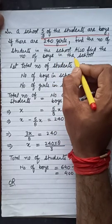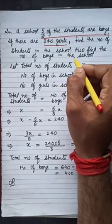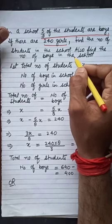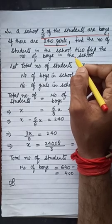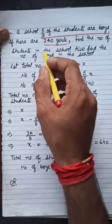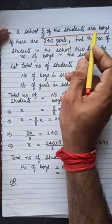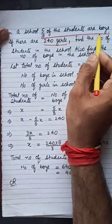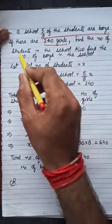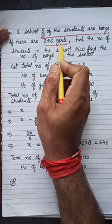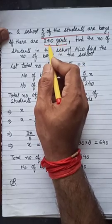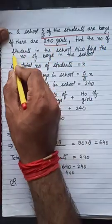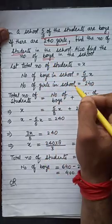Whenever a word problem is given, first of all you have to read it properly and try to understand two things: what is given in the question and what is required. As given in the question, 5/8 of the students are boys — this describes the number of boys. The number of girls is given as 240. And we have to find the total number of students in the school as well as the number of boys.